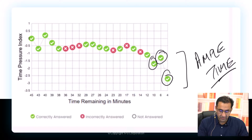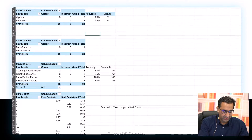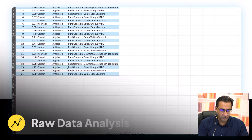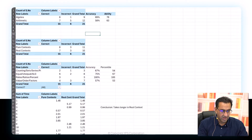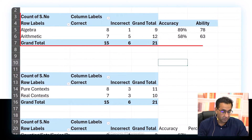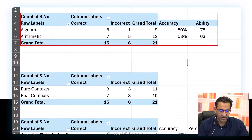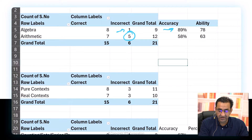Let's open Excel and look at the raw data. I've transposed all of the data into Excel. Here is a pivot table with algebra and arithmetic. You can see this student made most of his mistakes in arithmetic — just one mistake in algebra. His accuracy in algebra is 89%, while his accuracy in arithmetic was only 58%.